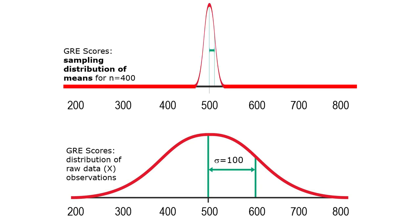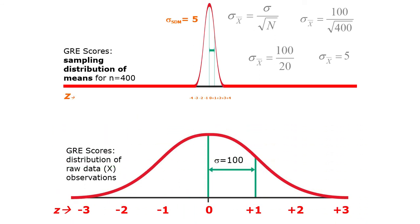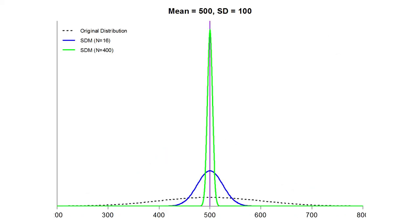Here's what those two sampling distributions look like overlaid on top of each other with the original distribution. Now with a sample size of 400, we get a much skinnier distribution — the standard error is only 5. That's 1/20th the size it was before. Almost all those means are going to be found within a pretty narrow range on either side of the population mean. The original population looks pretty low and flat but it's still normal — it's just really hard to see when it's so squished down.